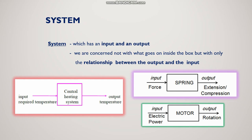For example, from a heating system, what are we getting? We are getting temperature. We have to give input as electricity and also set what temperature we need. There are many components in the heating system. When it receives electricity, the heating coil is heated and we get the required temperature as output. Similarly, when we give force as input to a spring, we get extension or compression as output.